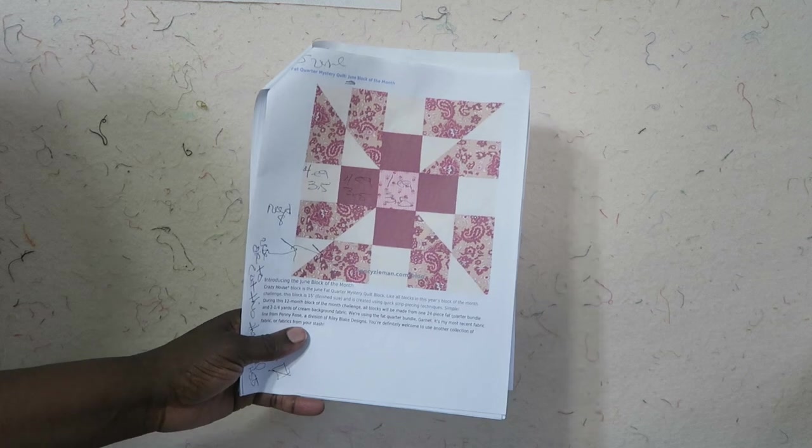Hi, it's T with T Quilts and we're back with the June block for the Nancy Zeman 2017 mystery block of the month. We are working on the June block which is called Crazy House.